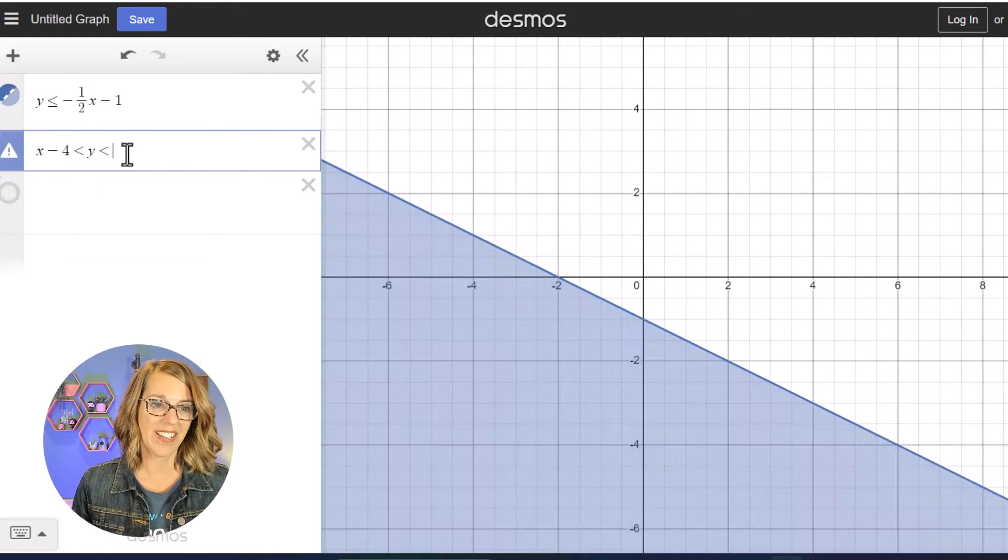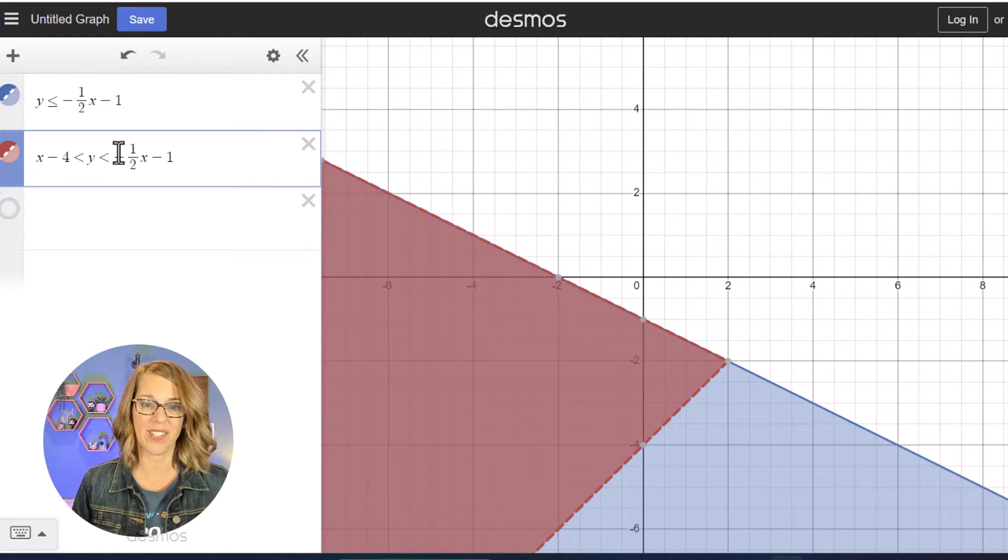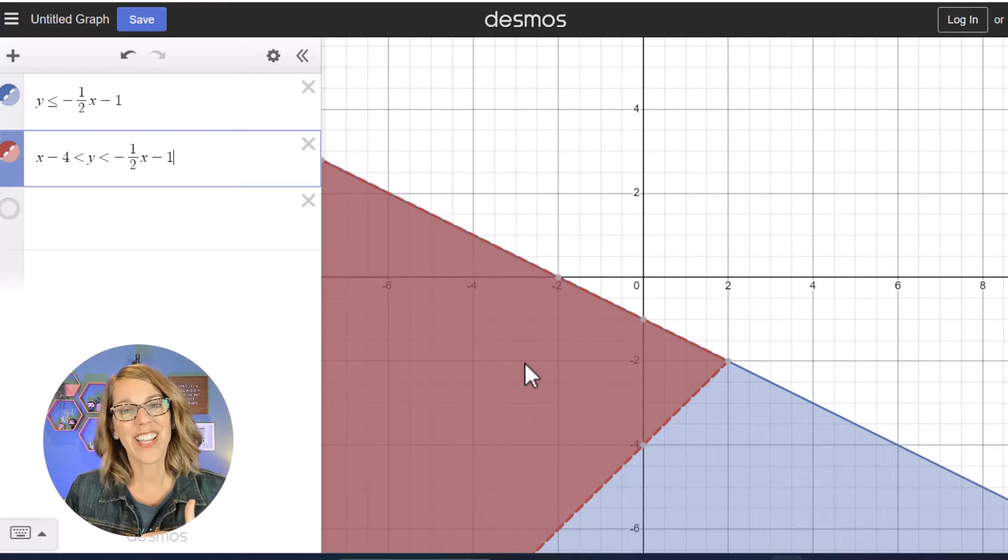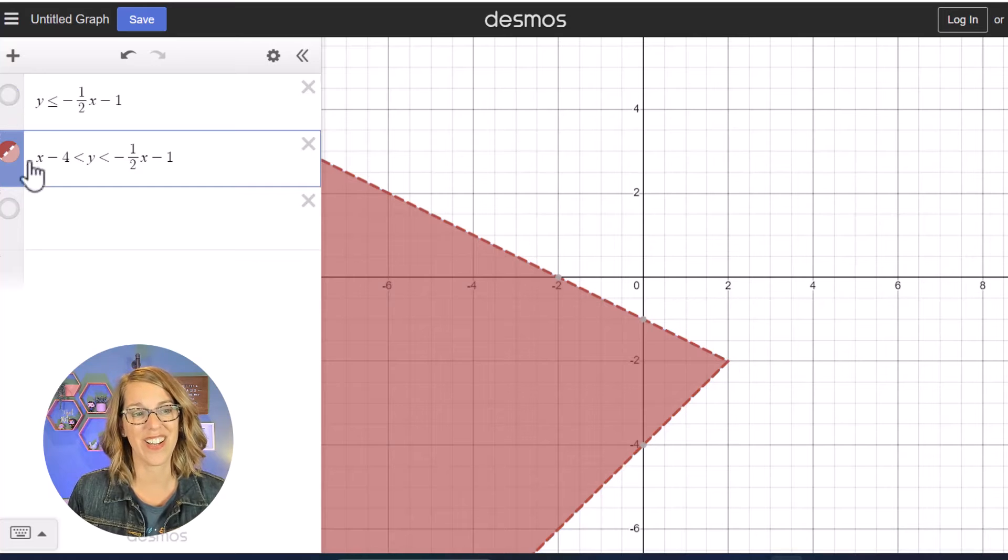And then less than, I'm gonna go ahead and copy and paste. I'm gonna ctrl C to copy that and then ctrl V to paste that. Now it looks like it's shaded more than just in between, but I still have that other shading on there. So now I've got just strictly in between those two curves.